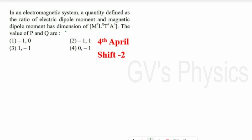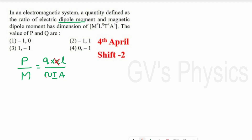Next question has the same pattern as the previous one. In an electromagnetic system, the quantity defined as the ratio of electric dipole moment to magnetic dipole moment has a given dimension. First we find the ratio: electric dipole moment p = q·2L, and magnetic dipole moment m = n·i·A, where n is the number of turns, i is current, and A is area. Now we substitute the dimension formulas. The 2 and n are constants and can be neglected.